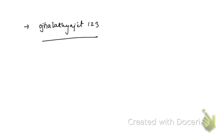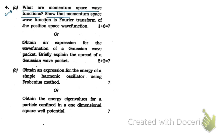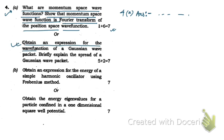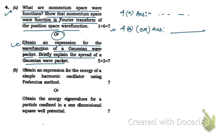Now let's start with question 4a: What are momentum space wave functions? The momentum space wave function is the Fourier transform of the position space wave function. I've already made a video on this topic — check the description box where I've written question 4a answer with a link. Similarly, for obtaining an expression for the wave function of a Gaussian wave packet and explaining its spread, that link is also in the description box under '4a or answer'.